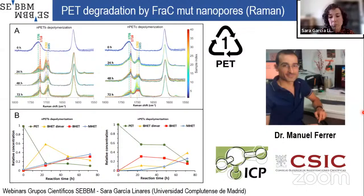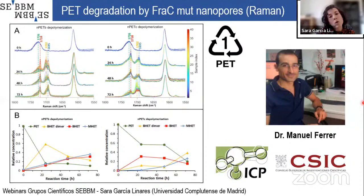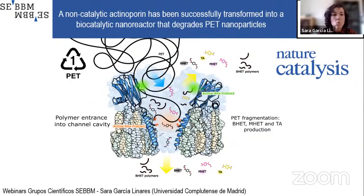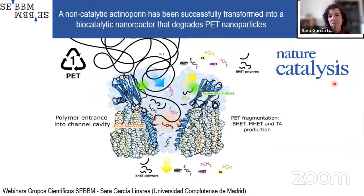Two important points: as controls, we used wild-type fragaceatoxin C pores and mutant fragaceatoxin C monomers in solution — neither showed any activity. So this catalytic activity is specific to the mutant nanopores reconstituted into the nanodiscs. Also, all experiments were performed at neutral pH and 40 degrees Celsius — no extreme conditions needed to achieve PET degradation. We successfully transformed a non-catalytic actinoporin into a biocatalytic nanoreactor capable of degrading PET nanoparticles, and this work is currently under third revision in Nature Catalysis.